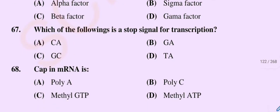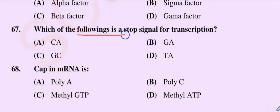Question number 67: Which of the following is a stop signal for transcription? Option A: CA, Option B: GA, Option C: GC, Option D: TA. So the correct option is Option C, GC.